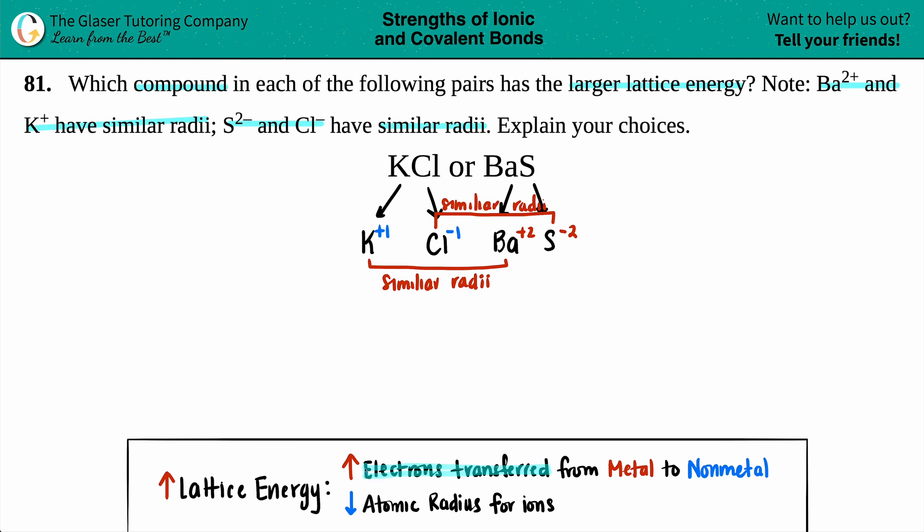More electrons transferred makes the lattice energy higher. Let's look at K+, Ba2+, Cl-, and S2-. We have our cations and anions. Potassium has a +1 charge, meaning it lost one electron. Chlorine has a -1 charge, meaning it gained one. So KCl transferred one electron from the metal to the nonmetal.